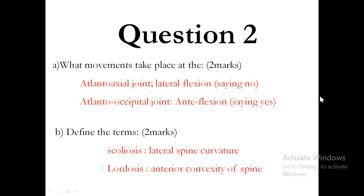What movements take place at the atlanto-axial joint? This is lateral flexion — when you move your head as if saying no. At the atlanto-occipital joint you have anteflexion of the neck, which is how you move the head when saying yes.